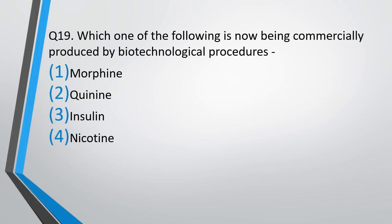Question number 19. Which one of the following is now being commercially produced by biotechnological procedures? Morphine, quinine, insulin, or nicotine? The correct answer is option 3, i.e. insulin.